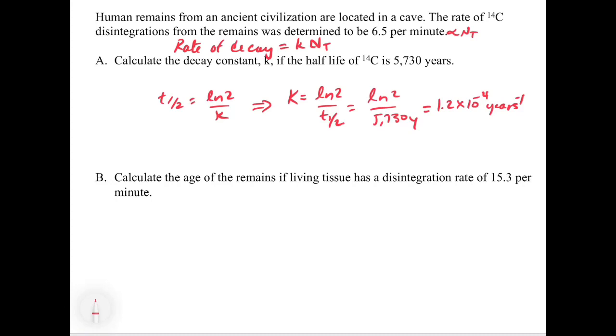The reason we're doing that is because in the second part of the problem, we have to calculate using the first order integrated rate equation, which requires us to have K. It says calculate the age of the remains if the living tissue has a disintegration rate of 15.3 per minute. You see living tissue right now, if you were to measure that, has 15 disintegrations per minute. This is proportional to the number of carbon-14 atoms in living tissue. In the remains that were found, they only have 6.5 disintegrations per minute. This is also proportional to the number of atoms. This is living, and this is in the remains.